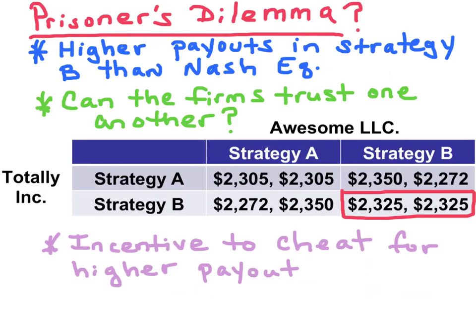A Prisoner's Dilemma can occur when each firm's respective payouts are greater if each firm does not play its dominant strategy. In this case, if both firms play Strategy B, each firm ends up with $2,325 — that's greater than the $2,305 they'd get in the Nash Equilibrium. However, how can each firm trust one another to play Strategy B? That's the dilemma.